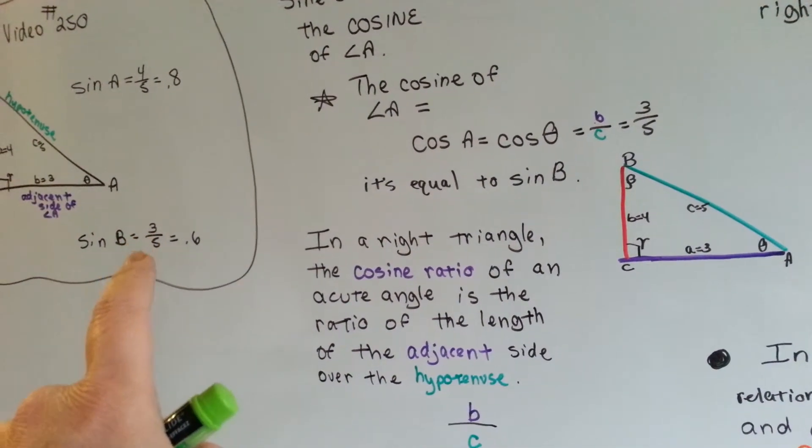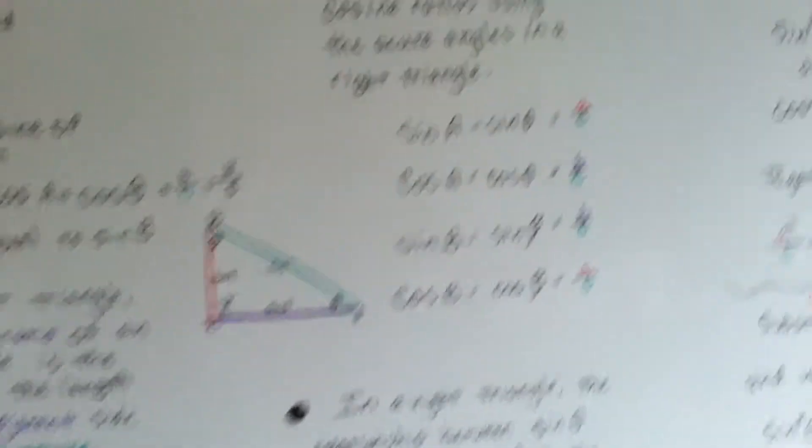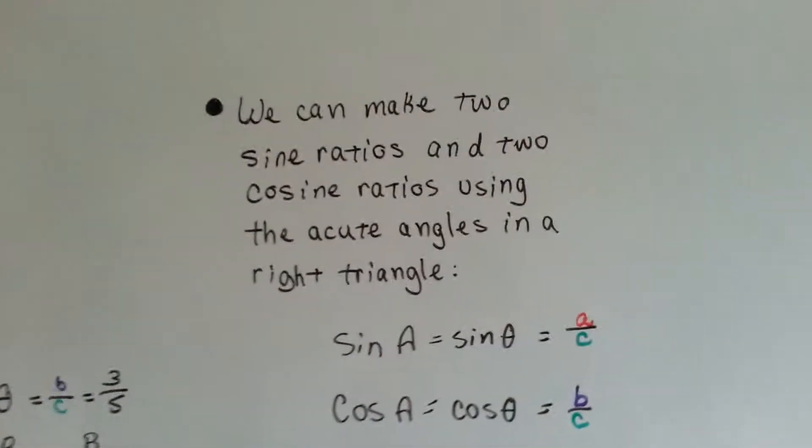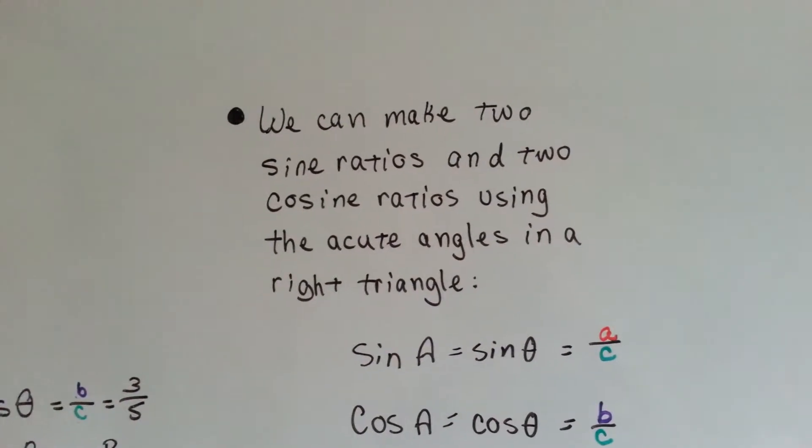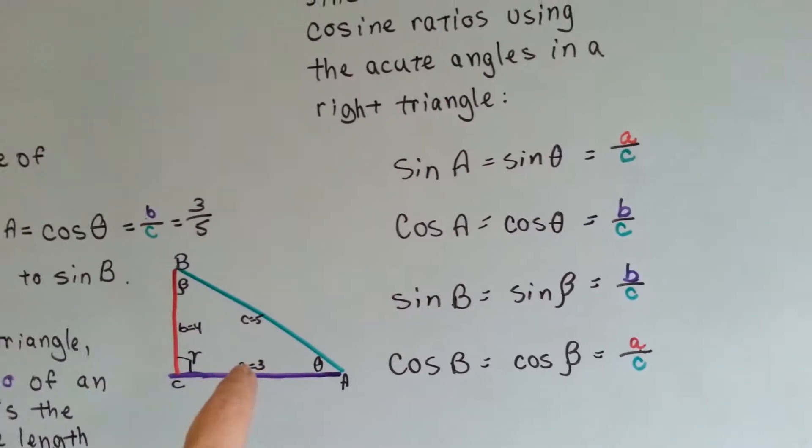It's like sine B, see? It's equal to sine B. So, we can make two sine ratios and two cosine ratios using the acute angles in a right triangle. So, we'll use this one to kind of help us out.